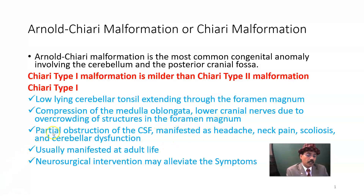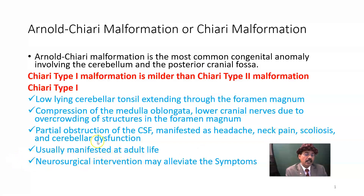This results in partial obstruction of the CSF, manifested as headache, neck pain, and scoliosis — that is, lateral bending of the vertebral column — usually manifested in adult life. Chiari type 1 usually manifests in adult life, and neurosurgical intervention may alleviate the symptoms.